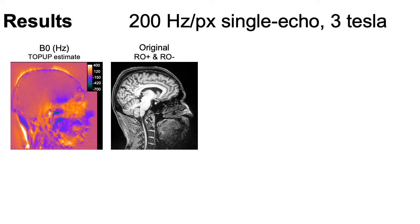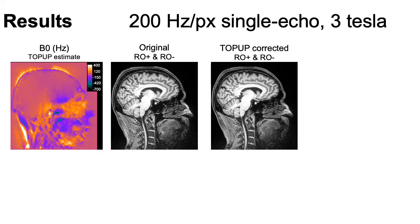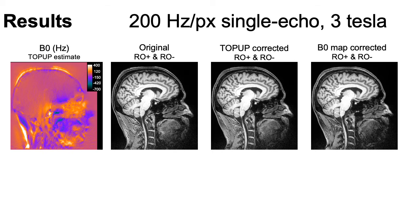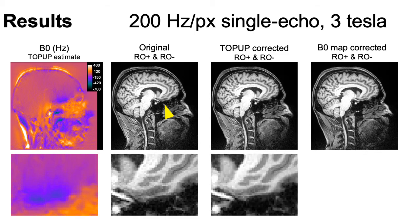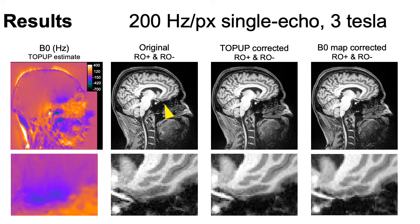For single echo data acquired at 3T, we can see in the original opposite polarity images there is substantial distortion. We can correct that distortion with top-up. B0 field map correction also helps, although there are some residual artifacts. We can zoom in on the region near the sinuses to show the distortion, the top-up corrected images, and the residual artifacts in the B0 map correction.